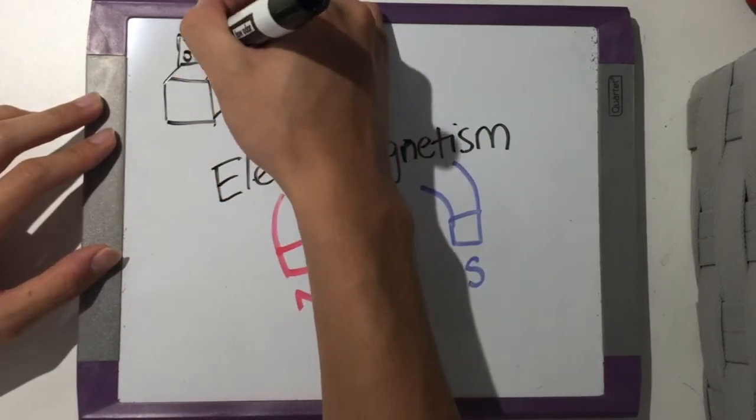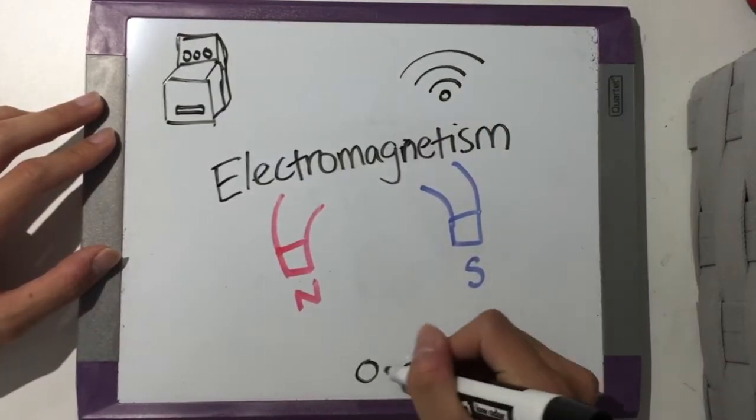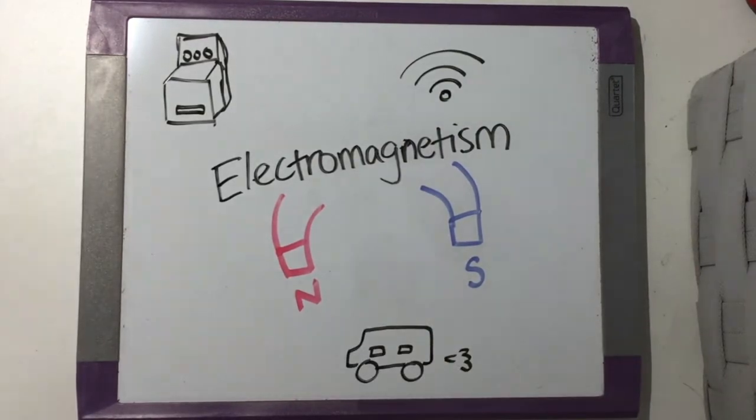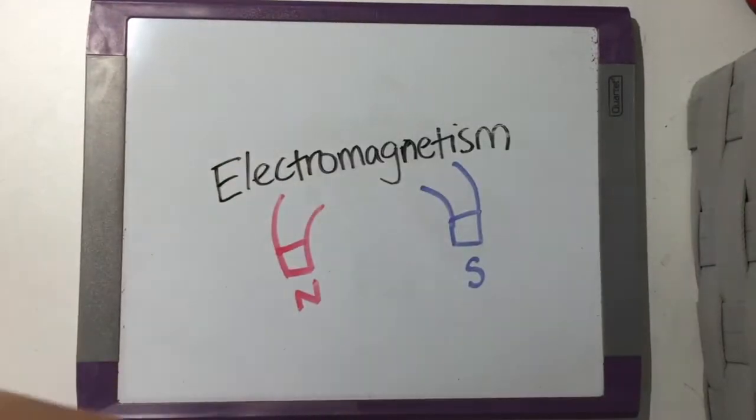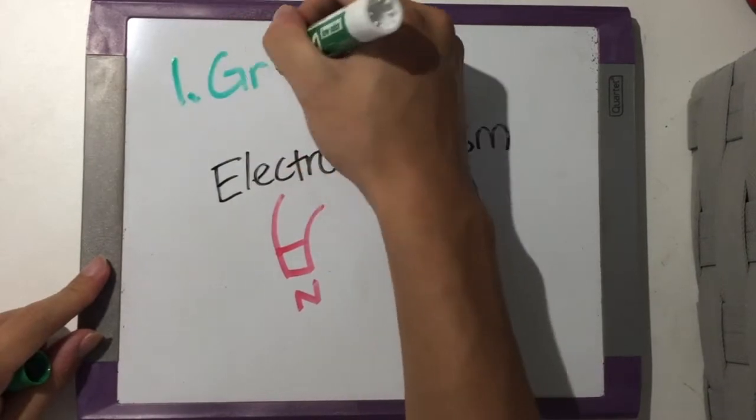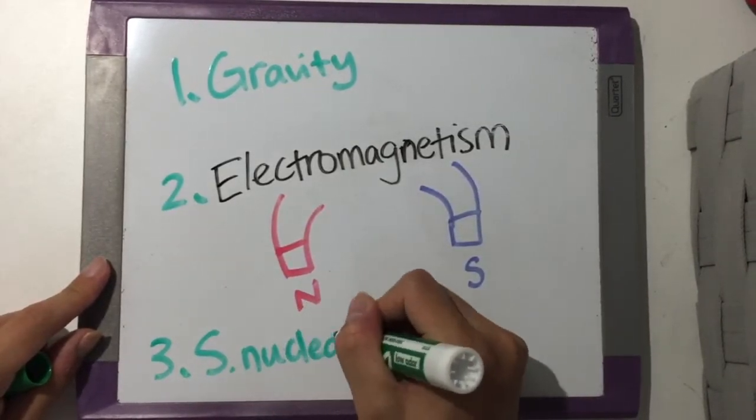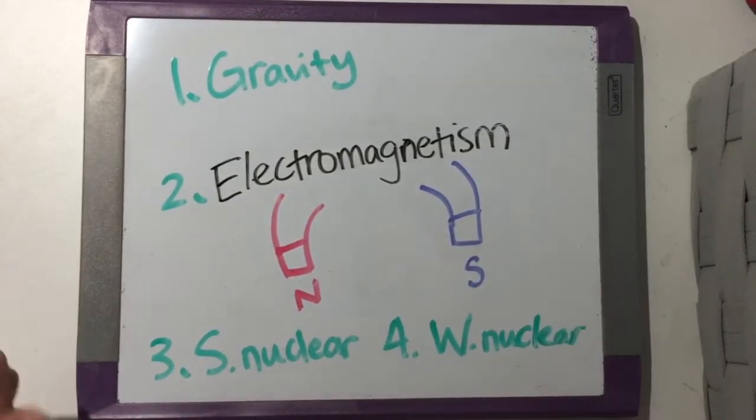Electromagnetism powers literally everything around us. Our dishwashers, engines, and even cars are all being powered by the electromagnetic force. It is one of the four fundamental forces of the universe, so yeah, a pretty big deal.